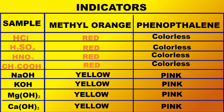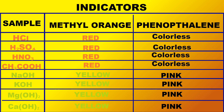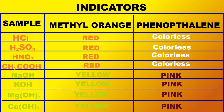When methyl orange is added to acids it turns red, and when added to bases it turns pale yellow. On adding phenolphthalein to acids it remains colorless, and when added to bases it turns pink.